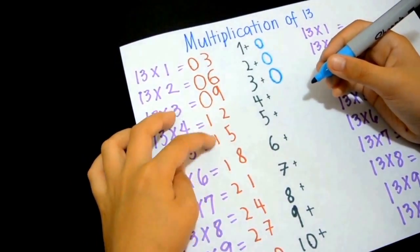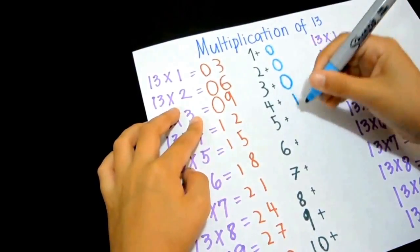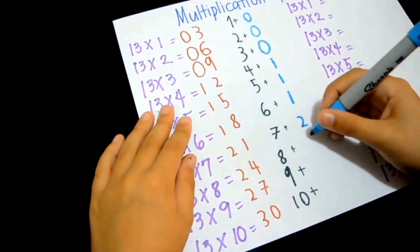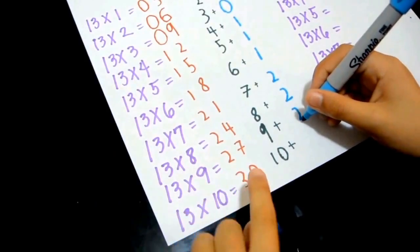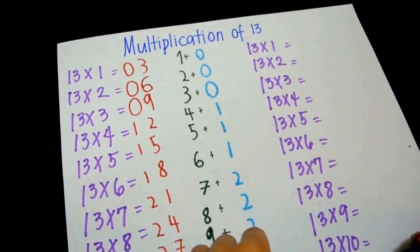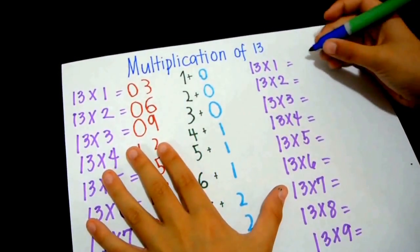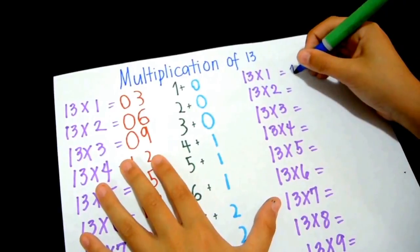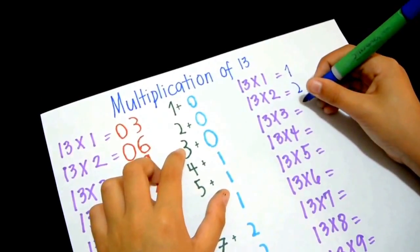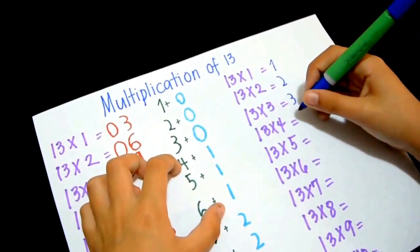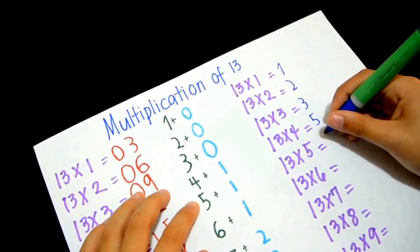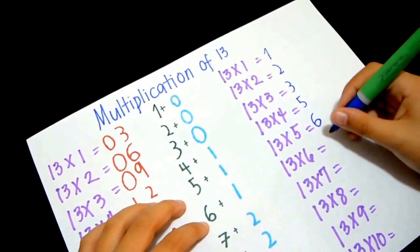Now write the answers, so 1 plus 0 is 1, 2 plus 0 is 2, 3 plus 0 is 3, 4 plus 1 is 5, 5 plus 1 is 6.